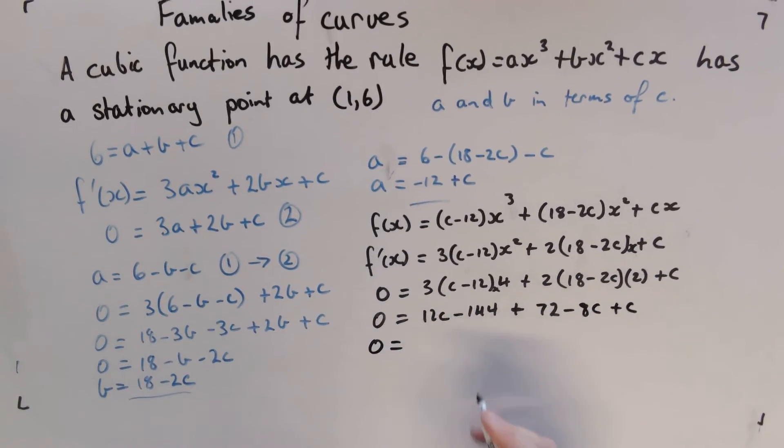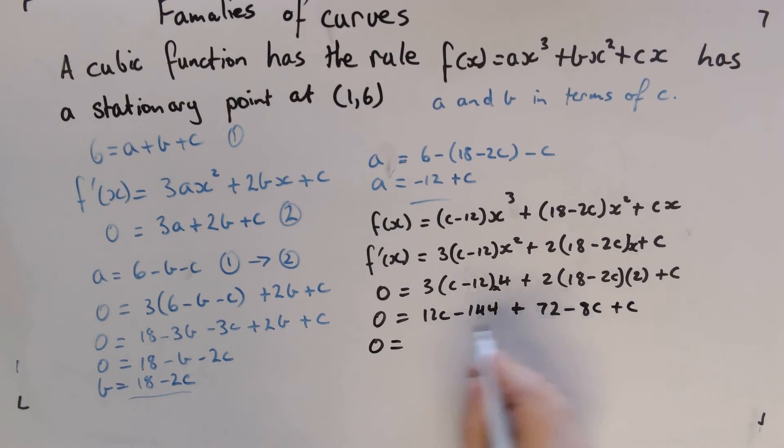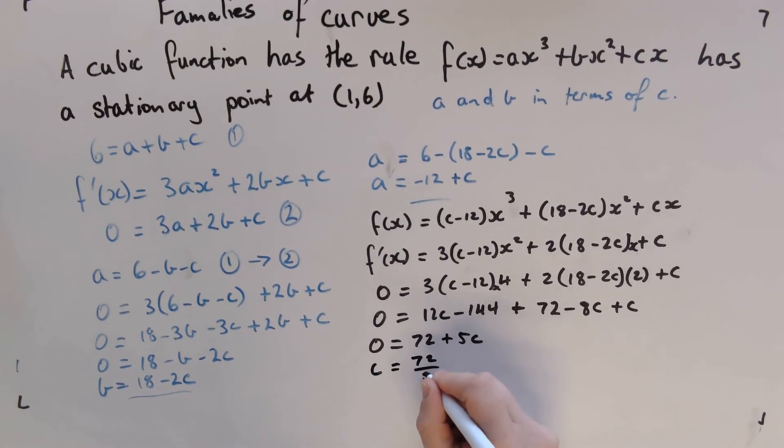So we're going to get 4c + c = 5c. So c is going to equal 72 over 5.